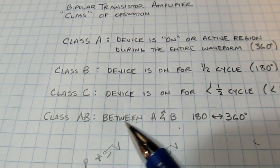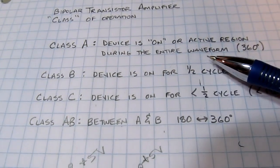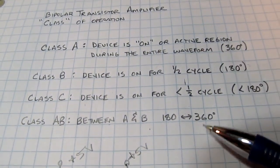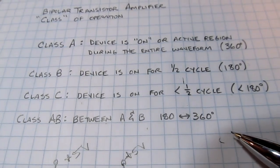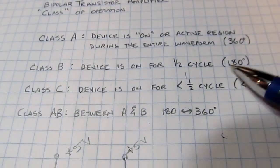Class AB, as you might imagine, is between A and B, where the transistor is off for part of the time, but not quite a half cycle. Something less than a half cycle it's off, and something more than a half cycle it's on.